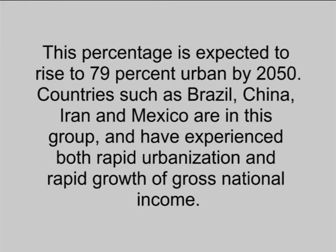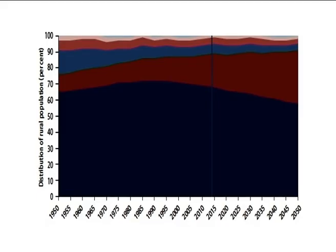This percentage is expected to rise to 79% urban by 2050. Countries such as Brazil, China, Iran, and Mexico are in this group and have experienced both rapid urbanization and rapid growth of gross national income. In the lower middle and low-income countries, the pace of urbanization has been slower until now.